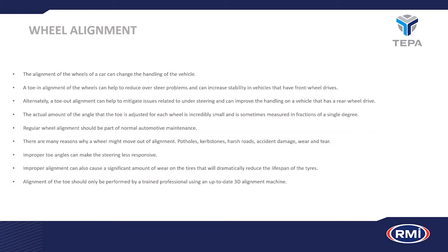Toe alignment should only be performed by a trained professional using an up-to-date 3D alignment machine. Up-to-date meaning the specifications in the machine must be the latest — there are occasions when a manufacturer changes specifications because engineers have found the original specs are no longer ideal and issue an update. It's important to ensure the person using the equipment is trained and the latest specifications are loaded onto the 3D alignment machine.